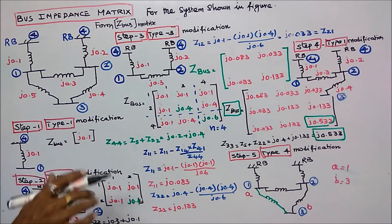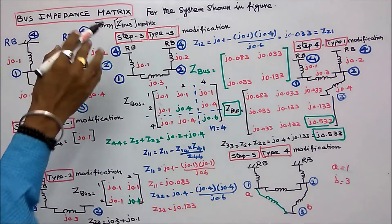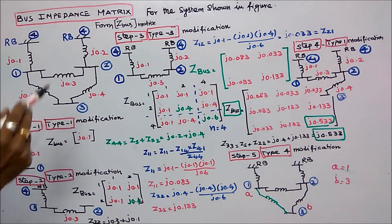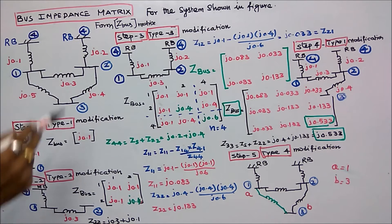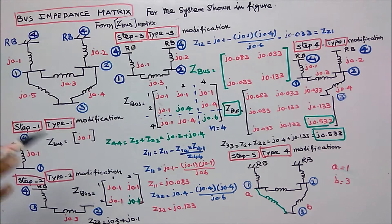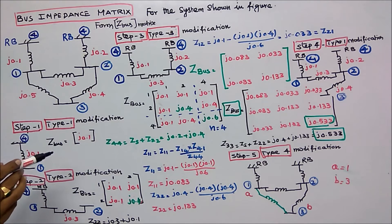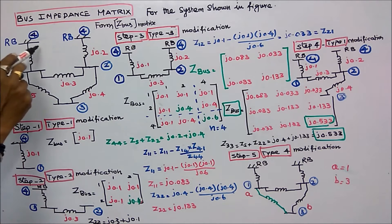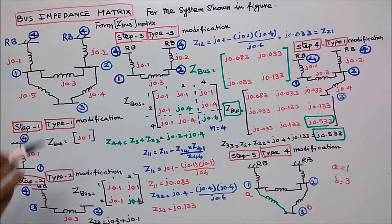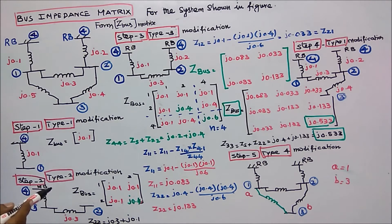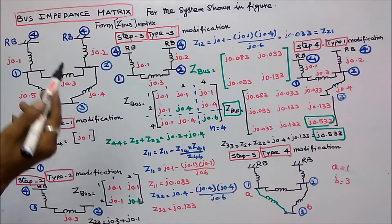In this class we work out one problem on bus impedance matrix for the system shown in the figure. We have to form the Z-bus matrix. The system consists of four buses; bus number four is the reference bus. We have to form a Z-bus matrix and we will get a three by three matrix as the answer.